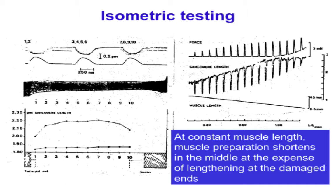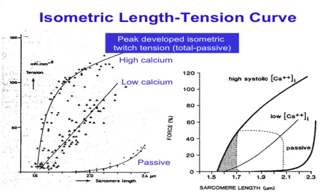The apparent descending limb seen in previous data is entirely an artifact of the muscle shortening at its ends during contraction—it doesn't actually happen. Cardiac muscle cannot be stretched as much as skeletal muscle, so you can't reach a good part of the descending length-tension curve. But even at lengths long enough to expect a descending limb, it isn't there. Cardiac muscle has no descending limb of the length-tension curve, and the reason many textbooks still say it does is because of this measurement artifact.